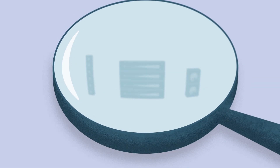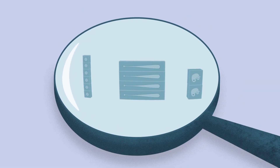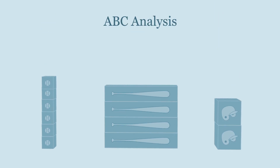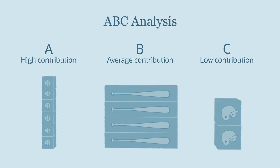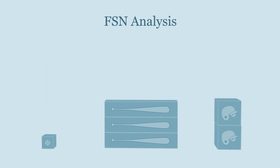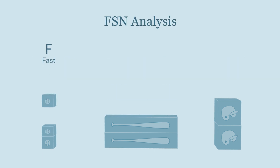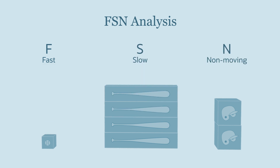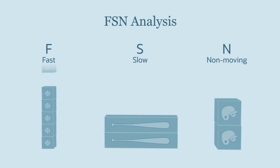There are many ways to analyze inventory. They center on two key measures: sales volume and contribution to profits. For example, ABC analysis sorts products into three categories based on sales or profits. FSN analysis is similar — inventory is sorted into fast, slow, and non-moving groups based on how quickly it turns over.